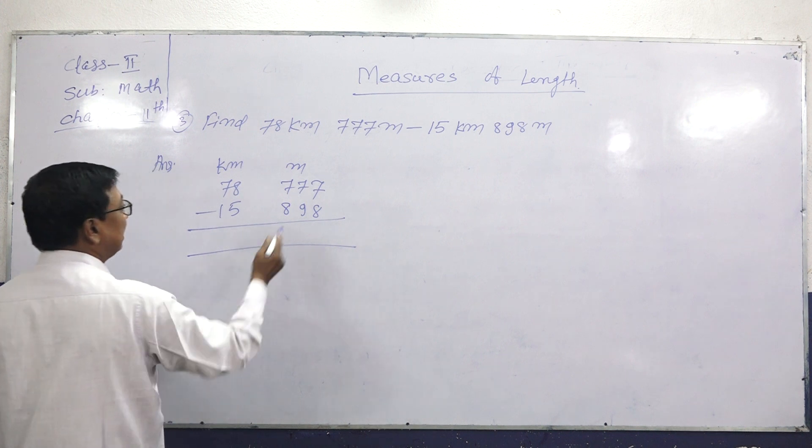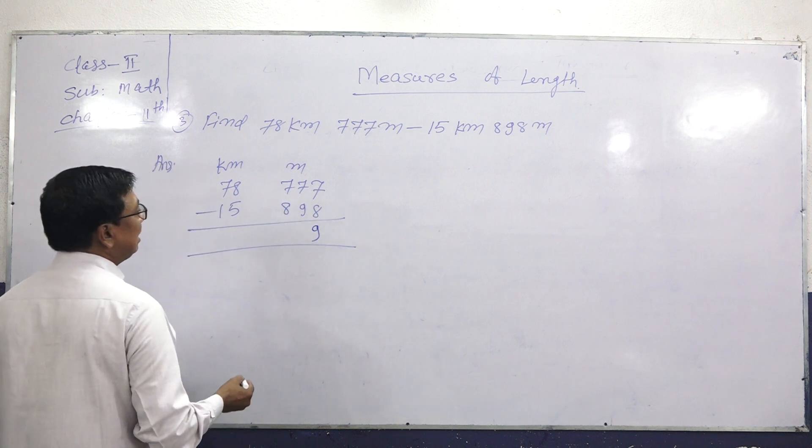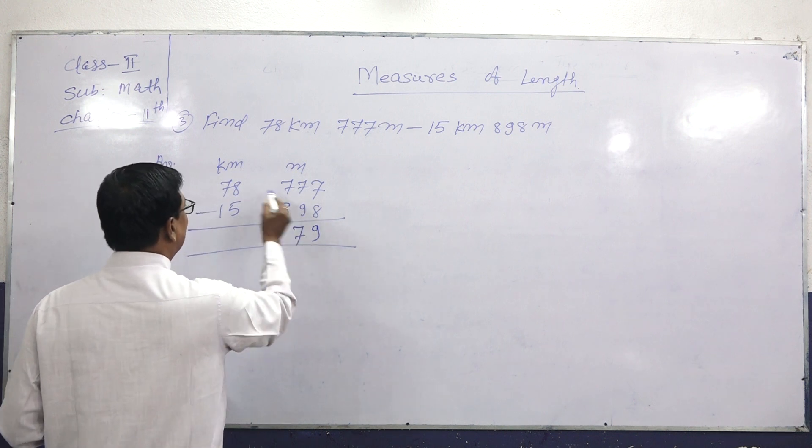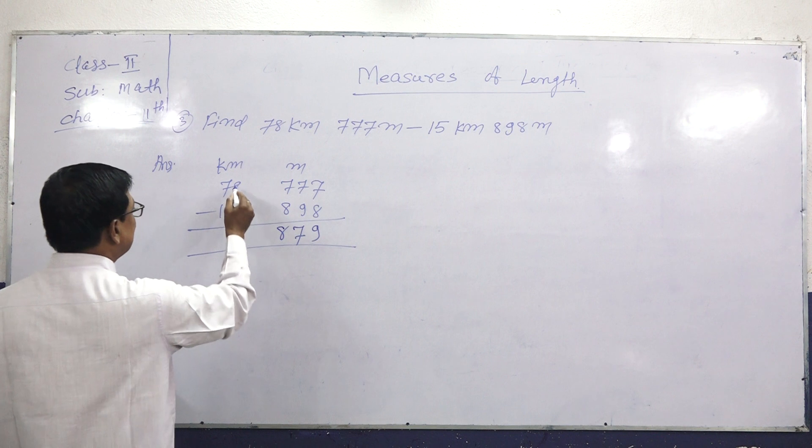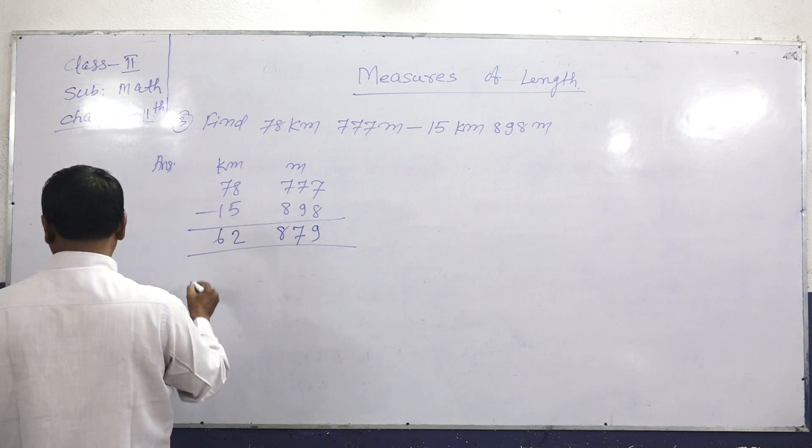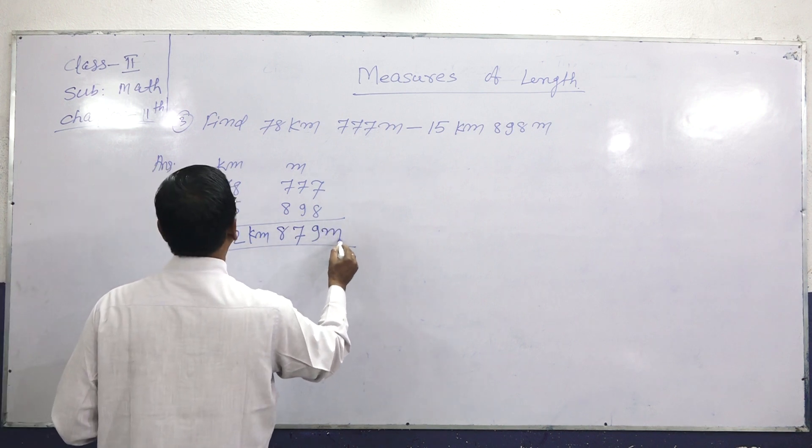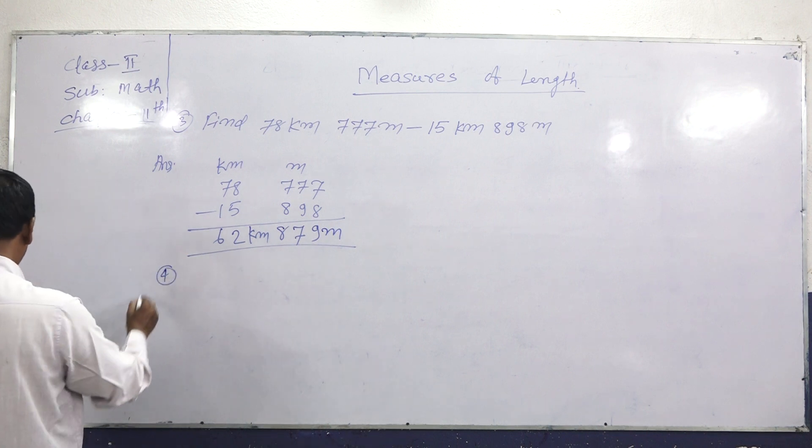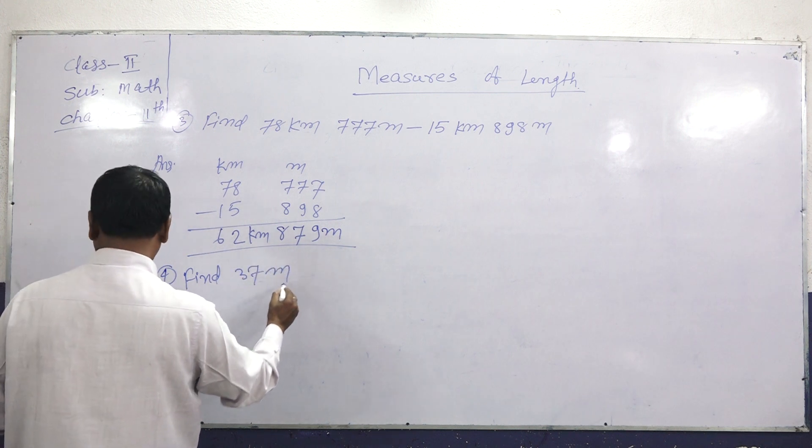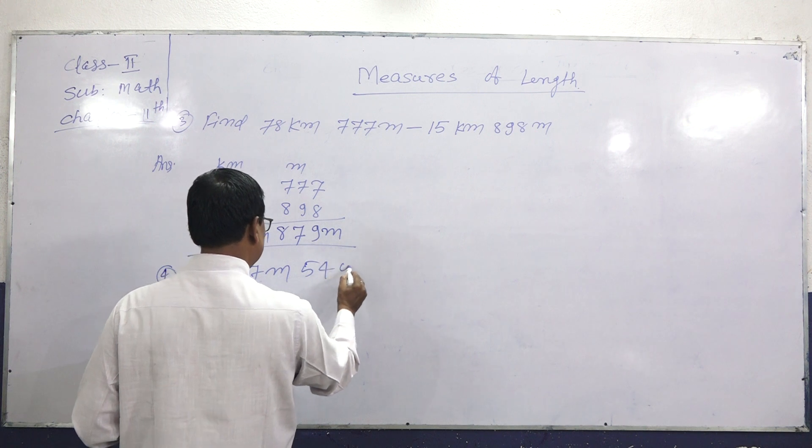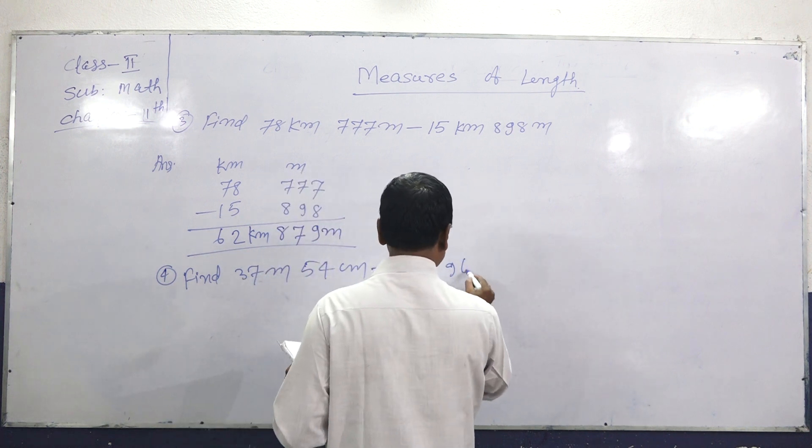Now see, here 777 is less than 898, so we need to borrow. Taking 1 kilometer equals 1,000 meters. 77 becomes 1,777 meters. Now 1,777 minus 898.